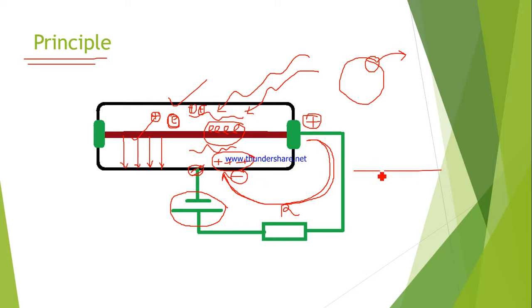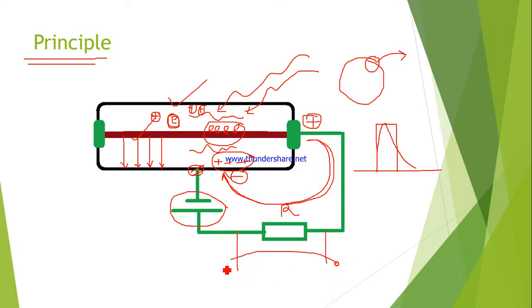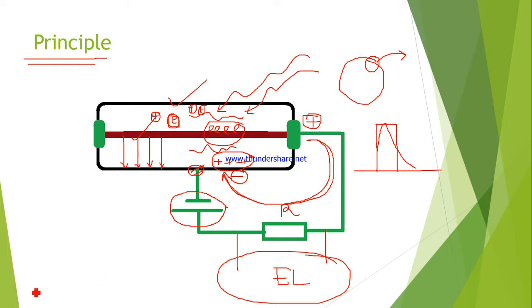The electrons flow through the external circuit, getting neutralized with the positive ions. During the conduction period, you will get a pulse — something like a very high frequency pulse with very low amplitude. Externally, an electronics circuit is connected which post-processes the signal and gives you the desired parameters like number of nuclear particles, their momentum, direction, etc.